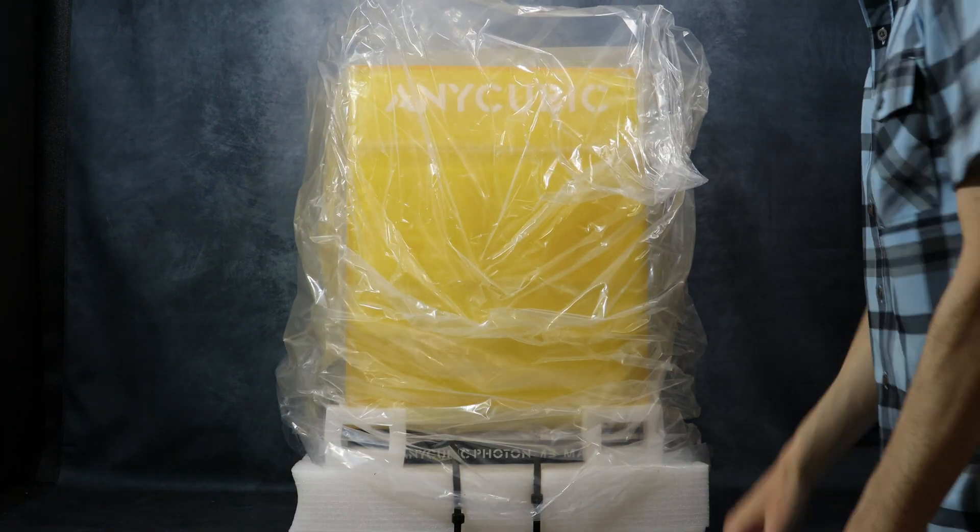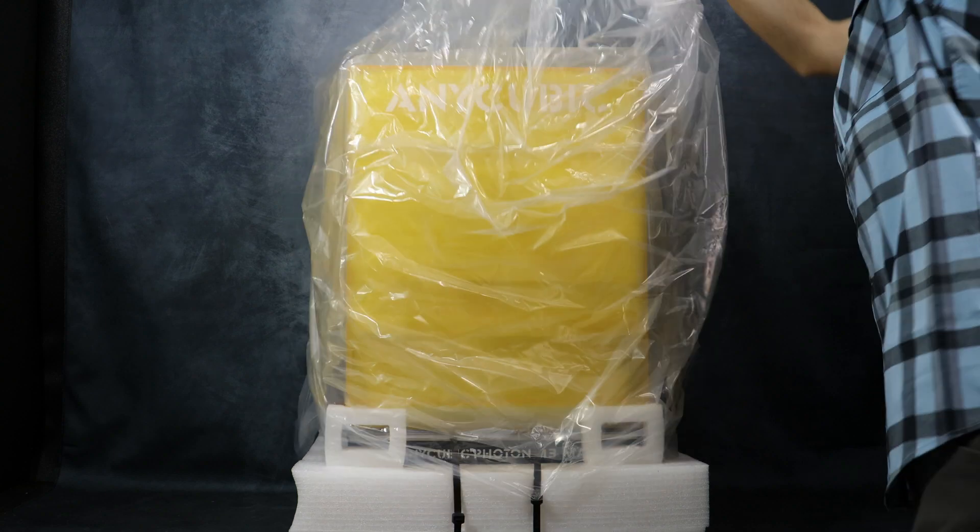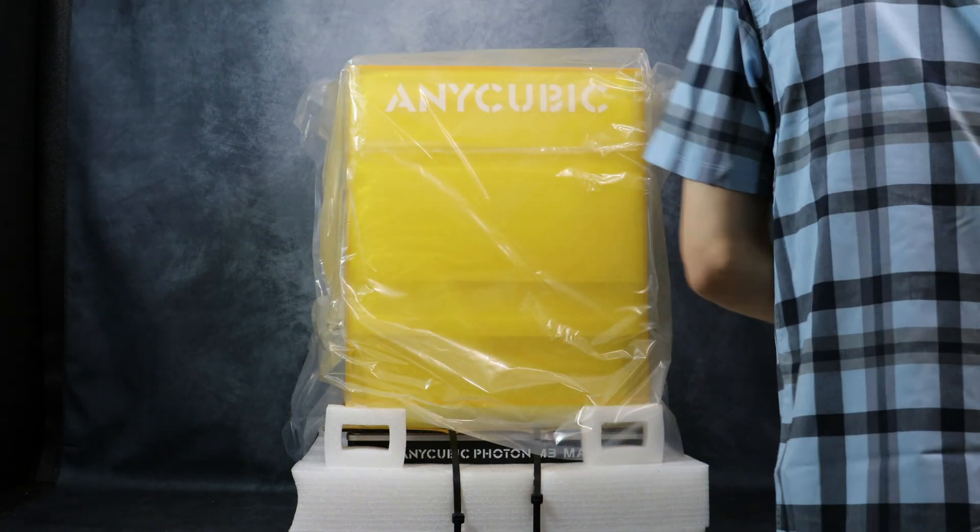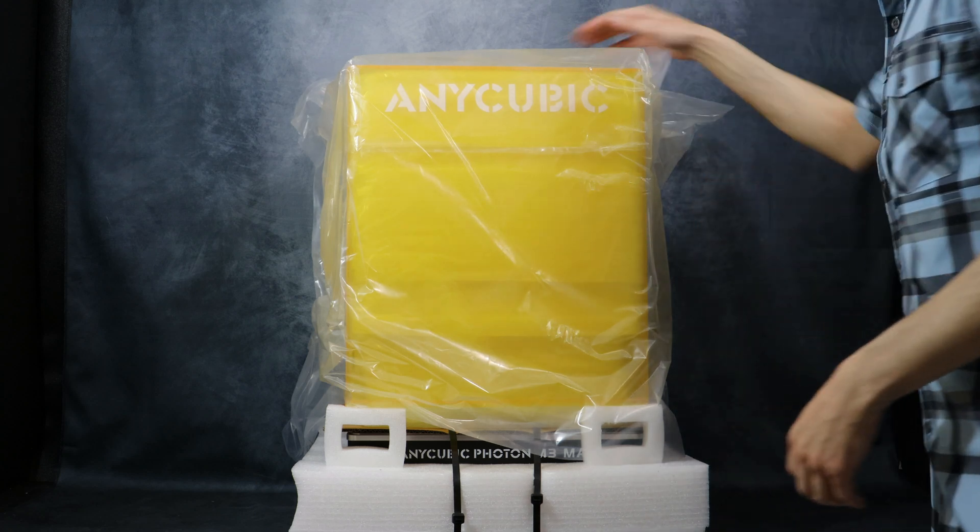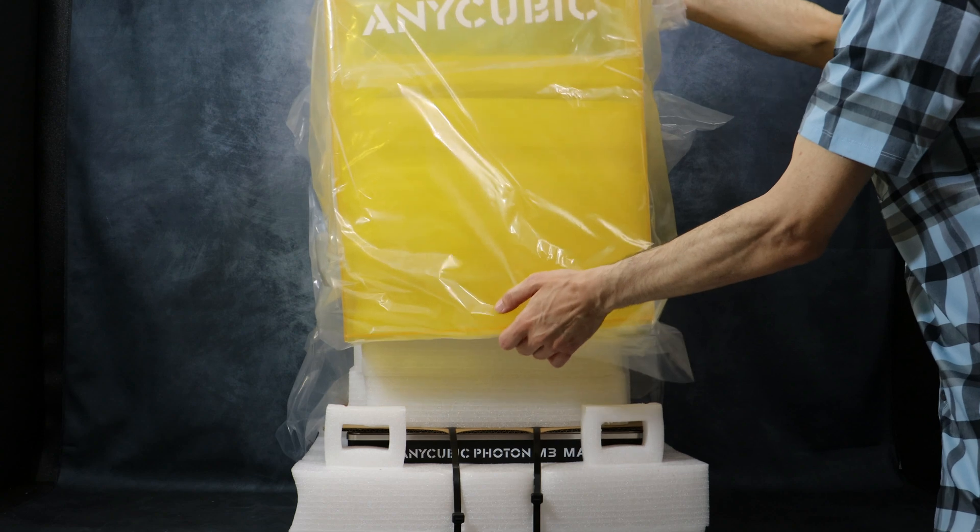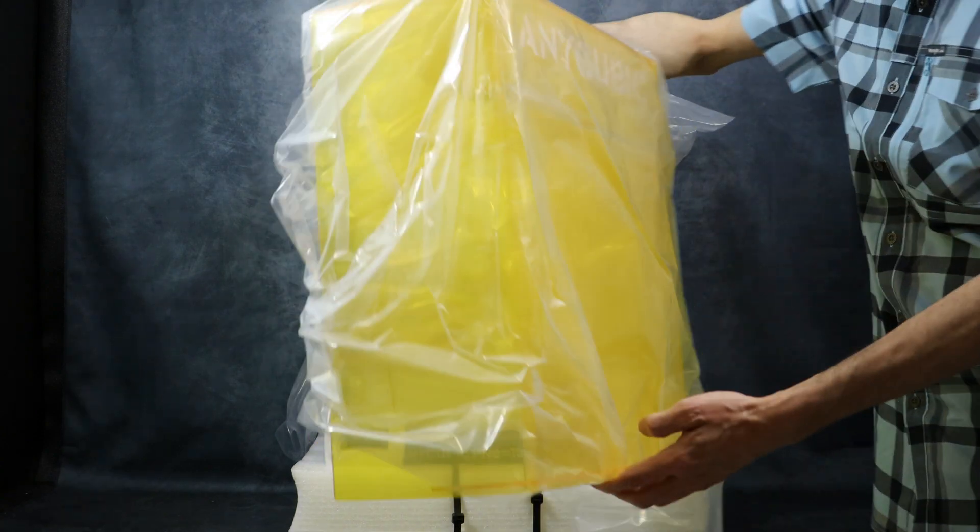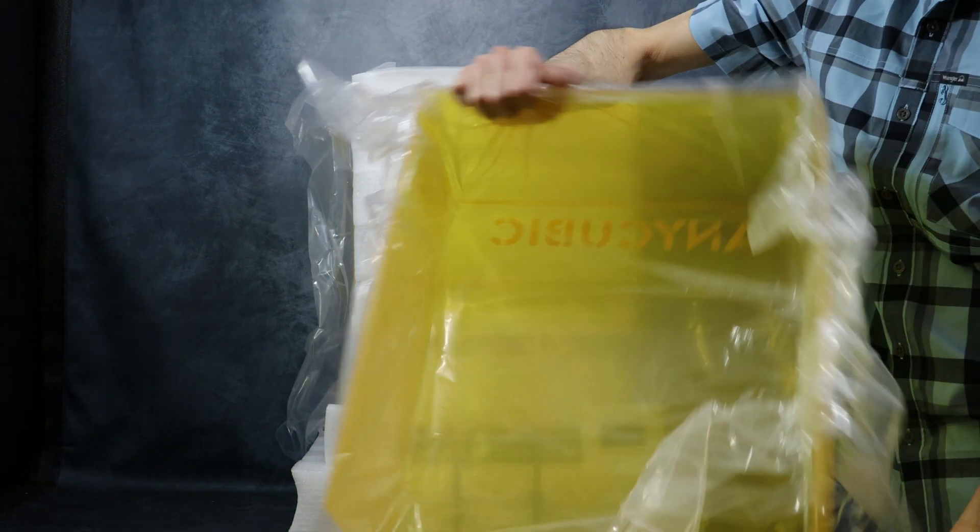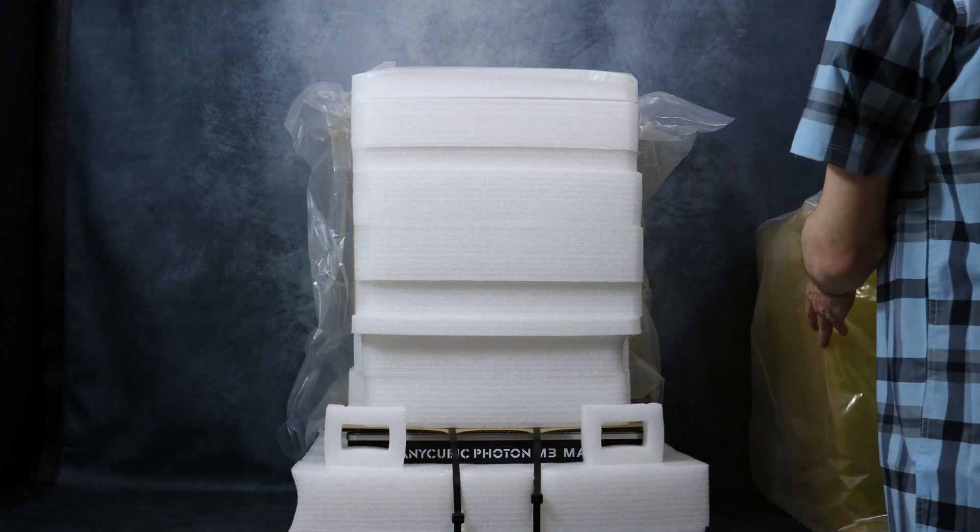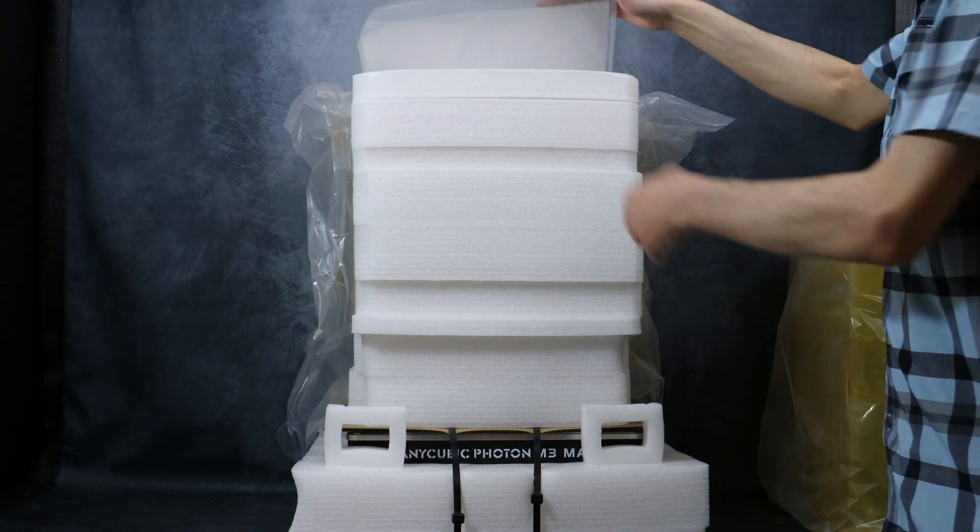Once we have the top foam rings removed we can remove the front panel of the printer. Then we can get to the inside where everything is stored. Here we have the front panel of the Anycubic Photon M3 Max. This is a really big cover. Once we have the panels out of the way we can get to the inside.